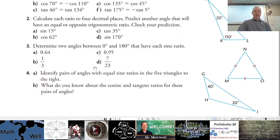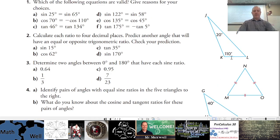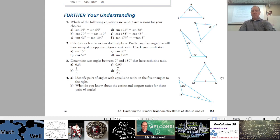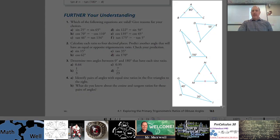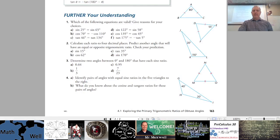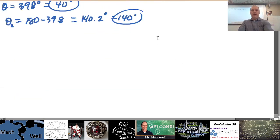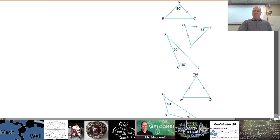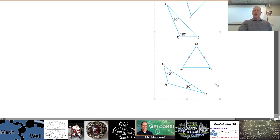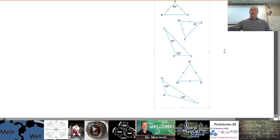Number four: identify pairs of angles with equal sine ratios in the five triangles shown. We need to find angles in these diagrams with equal sine ratios, which requires a little calculation first. Let's focus on one triangle at a time.